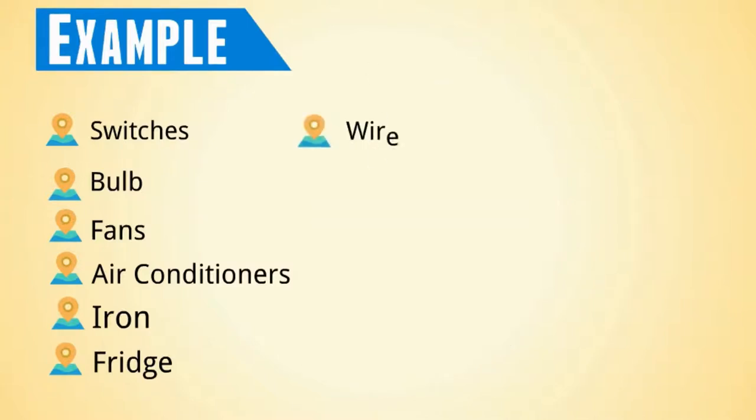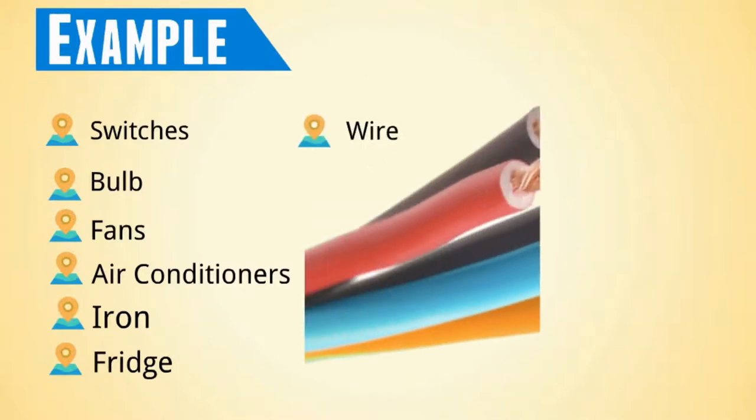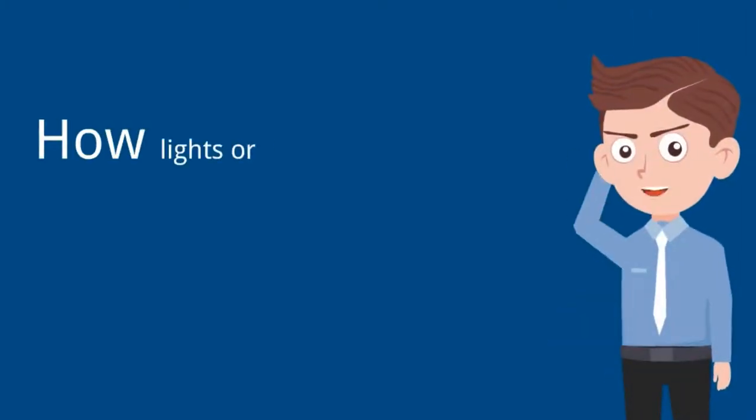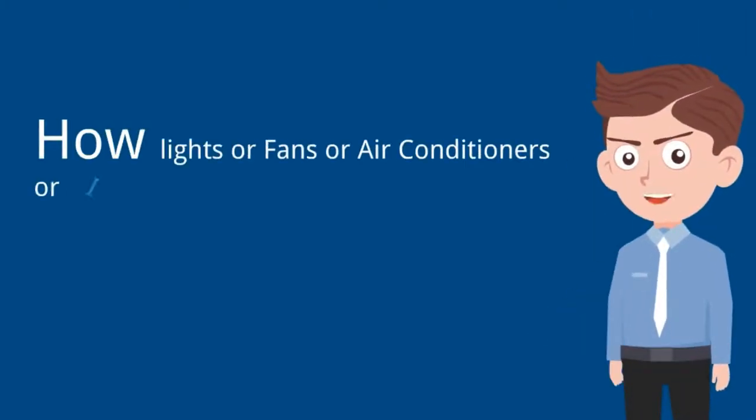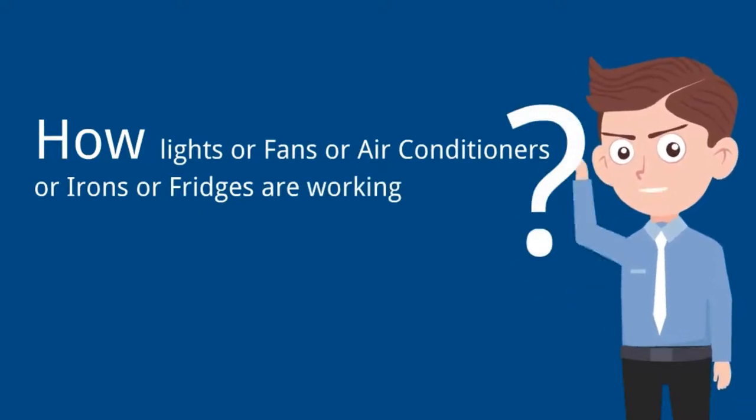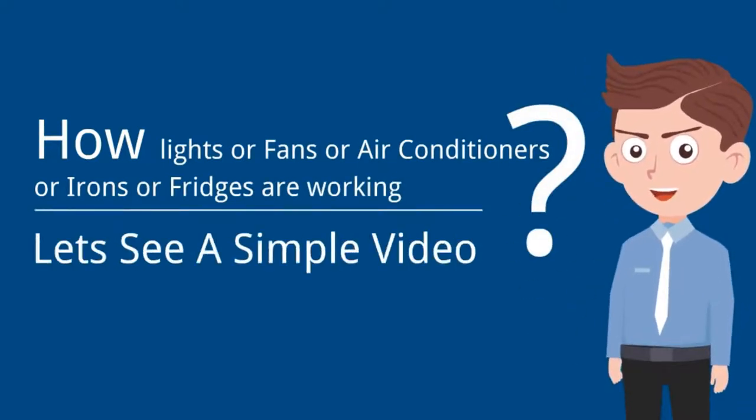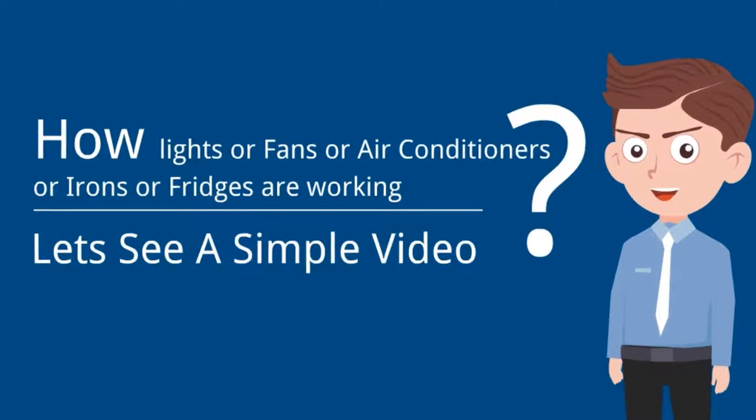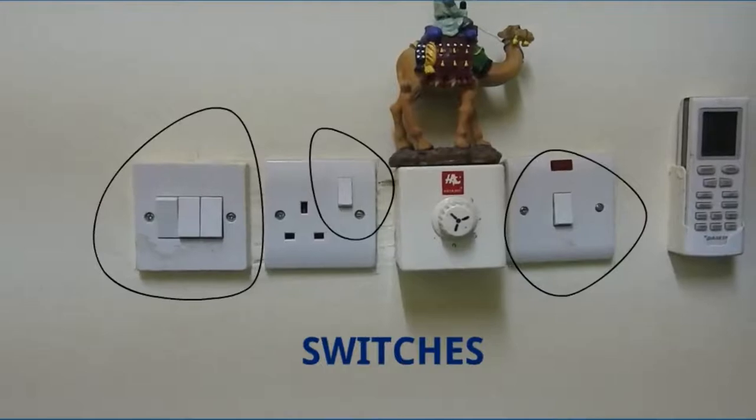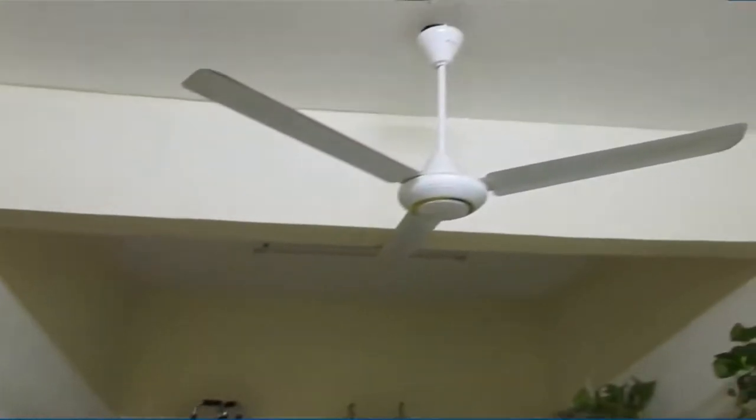We see so many places with wires and many more. How do lights, fans, air conditioners, irons, or fridges work? Let's see a very simple video. Look at this video - these are all switches, and this is a fan, and this is an air conditioner, this is a light.